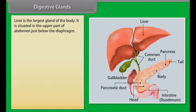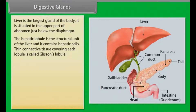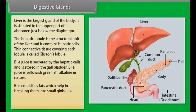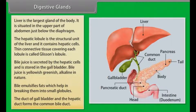The liver is the largest gland of the body. It is situated in the upper part of the abdomen, just below the diaphragm. The hepatic lobule is the structural unit of the liver and contains hepatic cells. The thin connective tissue covering each lobule is called Glisson's capsule. Bile juice is secreted by the hepatic cells and stored in the gallbladder. Bile juice is yellowish-greenish and alkaline in nature. Bile emulsifies fats, helping in breaking them into small globules. The duct of gallbladder and the hepatic duct form the common bile duct.